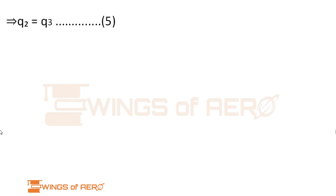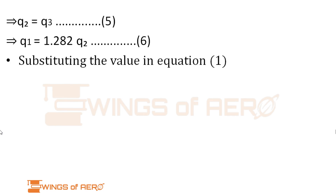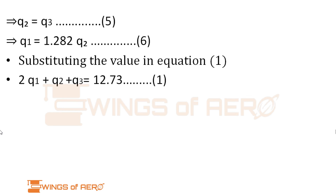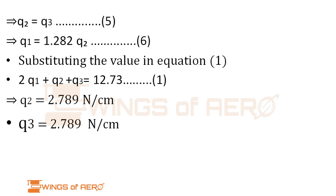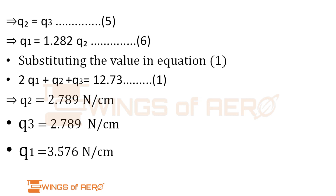Recalling Equations 5 and 6, both are expressed in terms of Q2. Substituting into Equation 1 — replacing Q1 with 1.282·Q2 and Q3 with Q2 — we get Q2 = 2.789 N/cm. From Equation 5, Q3 = Q2 = 2.789 N/cm. Substituting Q2 into Equation 6 gives Q1 = 3.57 N/cm.